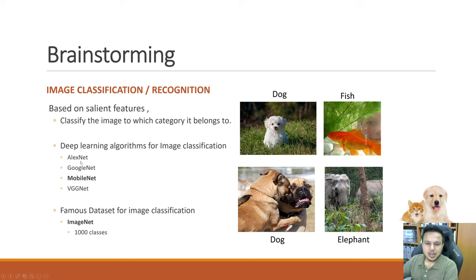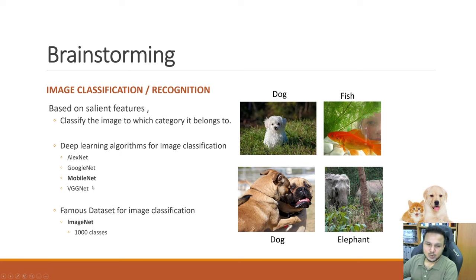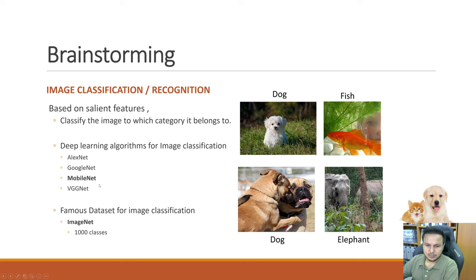We have some famous deep learning algorithms for image classification such as AlexNet, GoogleNet, and MobileNet. MobileNet is also by Google, and TensorFlow is also by Google. MobileNet's first version was in 2017, and now it has three versions — version 2 in 2018 and version 3 in 2019. We will be using MobileNet and other algorithms for image classification and recognition, using the ImageNet dataset.